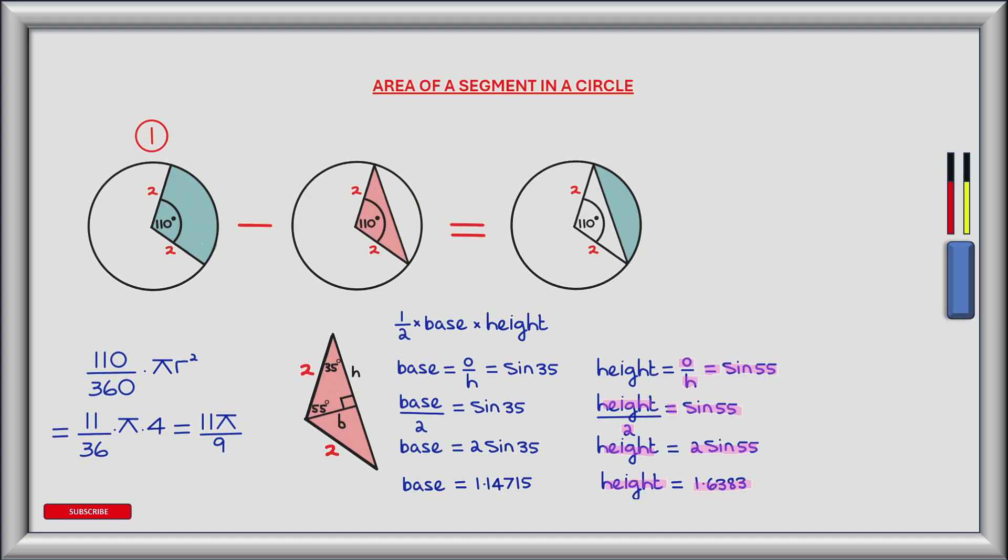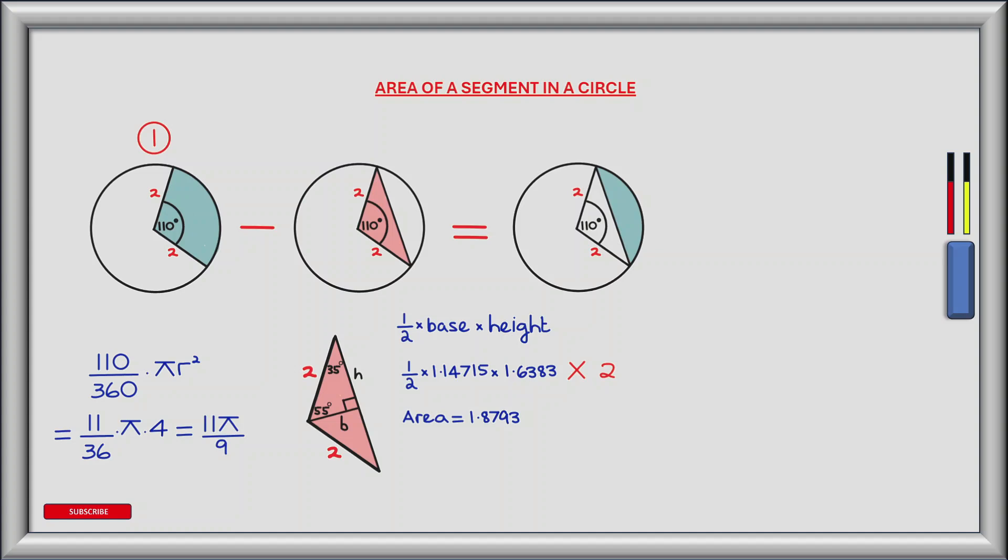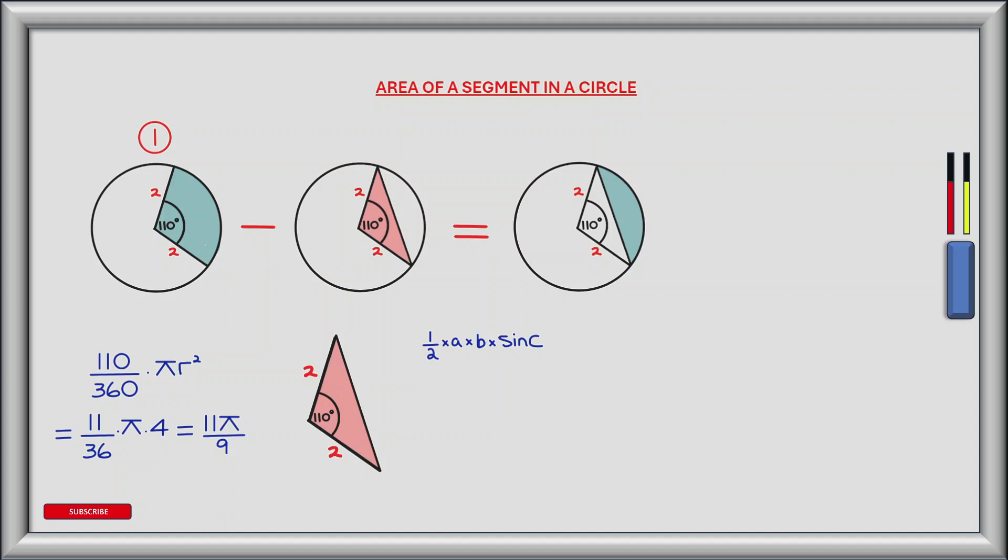Now if we plug these values for base and height into our area formula for a triangle, and then we need to remember we need to multiply whatever we get by 2, because we divided the triangle in 2, so we now have to multiply it by 2 to get the total area of the red shaded region. We get a total area of 1.8793.